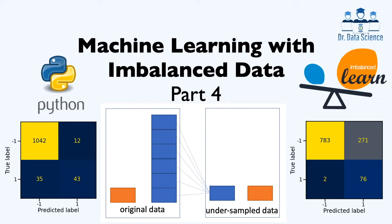This is the fourth video in the Machine Learning with Imbalanced Data series. In previous videos we discussed the class imbalance problem, where the number of samples in one class is far less than the total number of instances in other classes. Imbalanced datasets are prevalent in computer vision, healthcare data analysis, business, and finance.